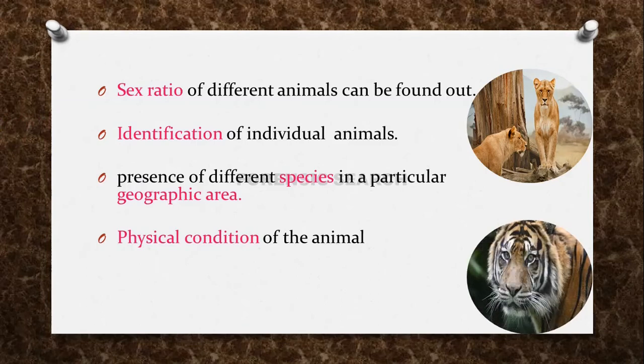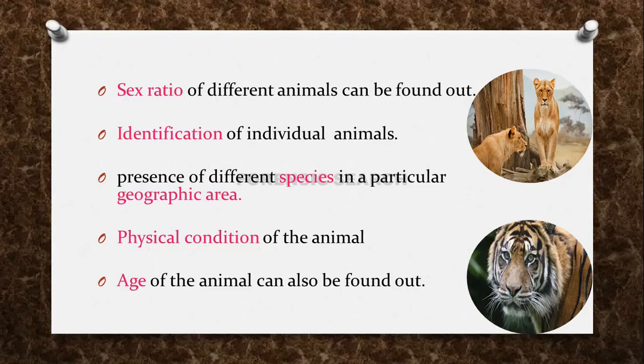Then, the physical condition of the animal. Suppose an animal is injured — due to the injury, the track or Pugmarks found will reflect that. So on the basis of that, we can identify the physical condition of that particular animal. As well as, on the basis of Pugmarks, we can also identify the age of the animal. So for these purposes, in forensic science or in wildlife forensics, we study Pugmarks.